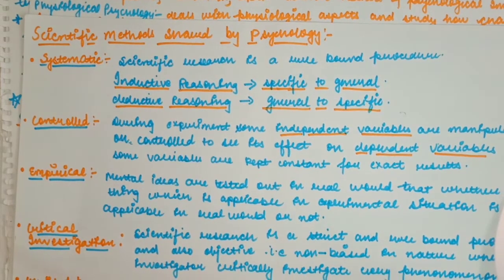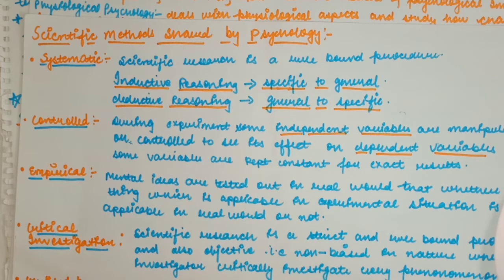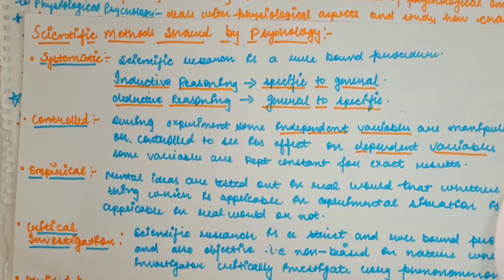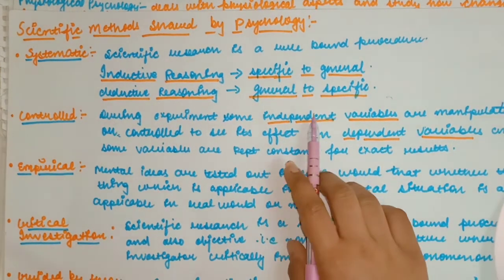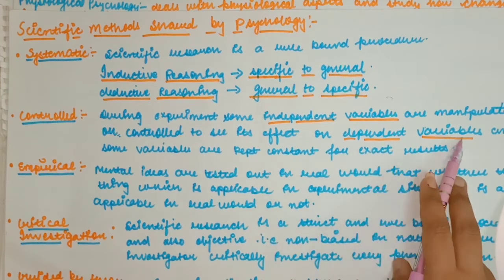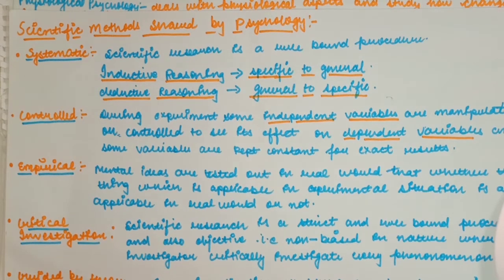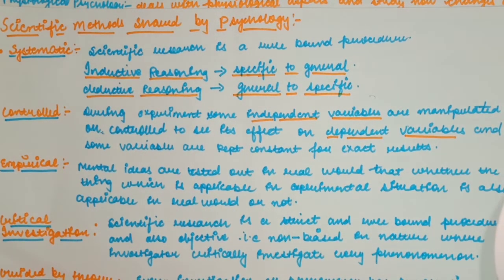The next method is control. Our scientific research is done under controlled conditions. We manipulate independent variables and observe what effect they have on the dependent variable. We control, manipulate, and influence the conditions according to the nature of the research and then conduct the experiment.